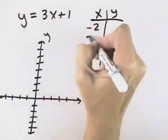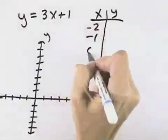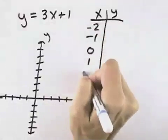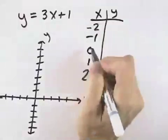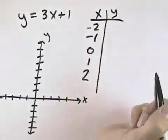I'm going to choose negative 2, negative 1, 0, 1, and 2 because they're relatively centered around the origin.